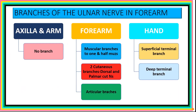Having covered the course and relations from the axilla down to the hand, we now focus on the branches of the ulnar nerve. In the axilla and arm there are no branches. In the forearm there are three categories: muscular branches to one and a half muscles, two cutaneous branches — the dorsal cutaneous branch and the palmar cutaneous branch — and articular branches to the elbow joint. In the hand are the two terminal branches: superficial and deep.